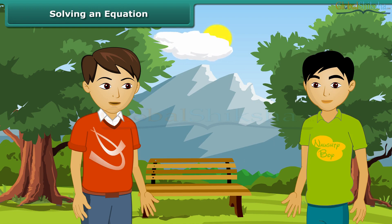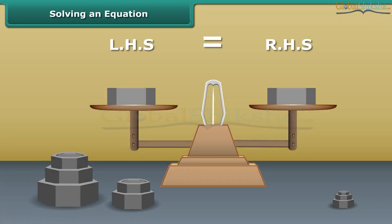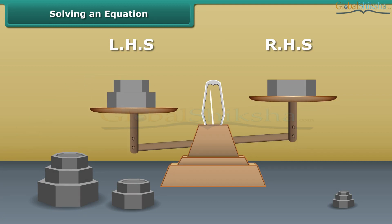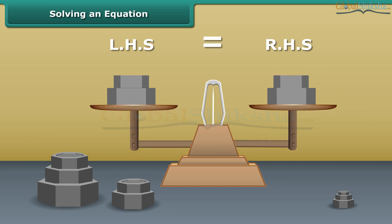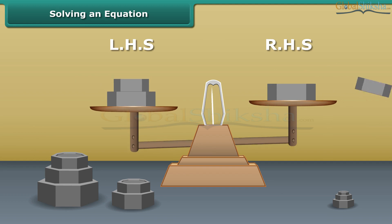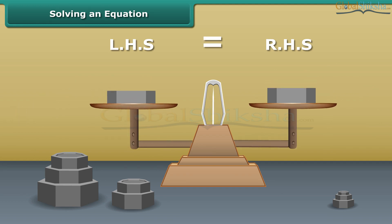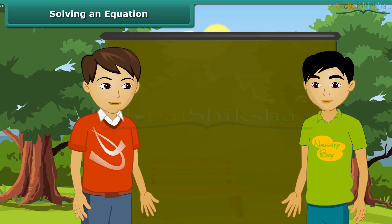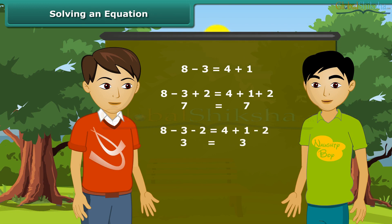How do we solve an equation? A balanced equation is like a weighing balance with equal weights on both its pans. If we add the same weights to both pans, the arm remains horizontal. Similarly, if we remove the same weights from both pans, the arm remains horizontal. If we add or subtract the same number from both sides, or multiply or divide both sides by the same number, the equation remains unchanged.